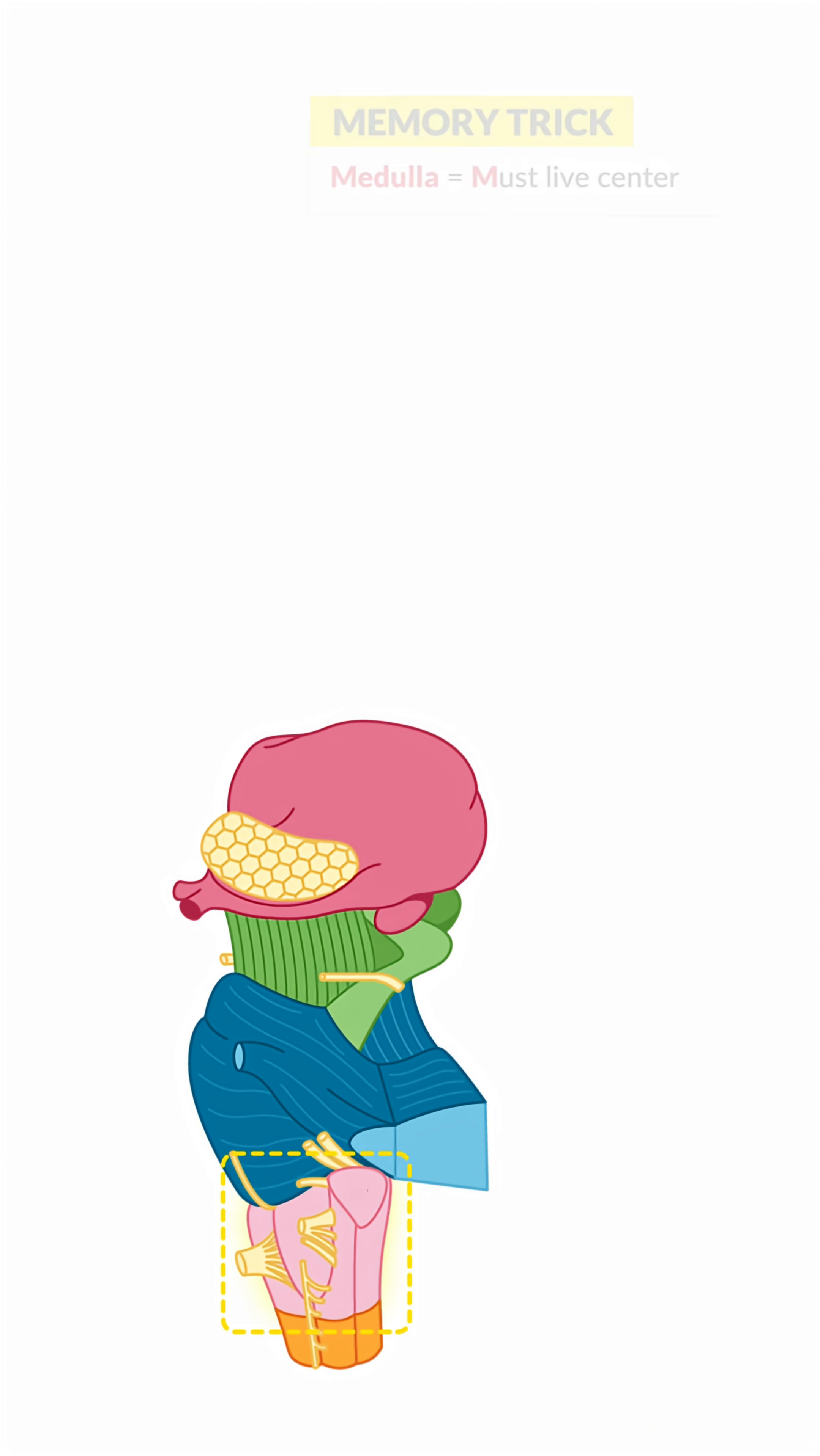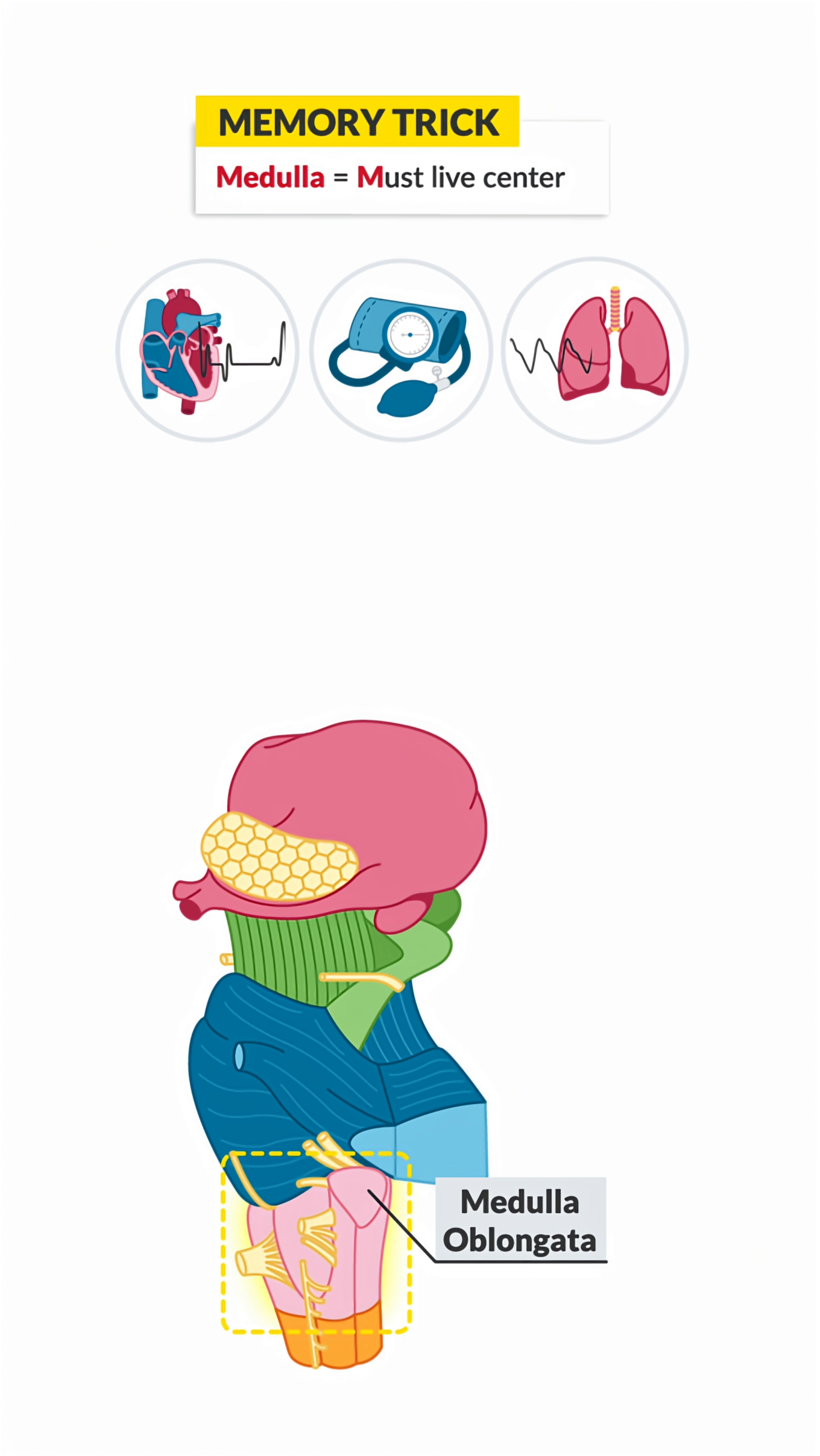Finally, the medulla oblongata. This guy handles your most critical life functions. We're talking heart rate, blood pressure, breathing, even coughing, swallowing, vomiting, and sneezing.